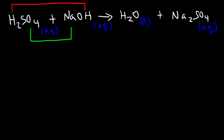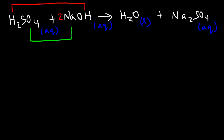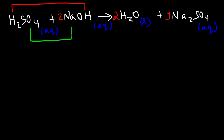Now that we have the products, we need to balance the formula equation. Right now we have two sodium atoms on the right side, so we need to put a 2 in front of NaOH. We have two hydrogen atoms in sulfuric acid and two more in NaOH, for a total of four hydrogen atoms, which means we need to put a 2 in front of water. Now the formula equation is balanced.